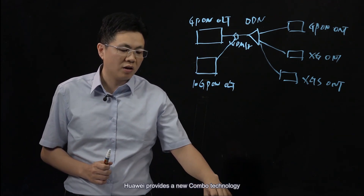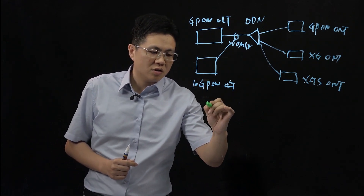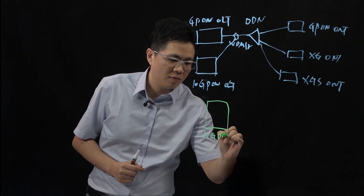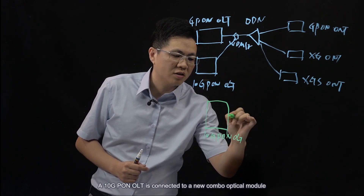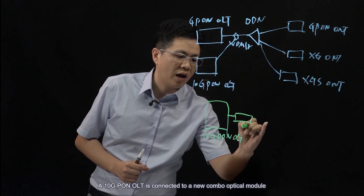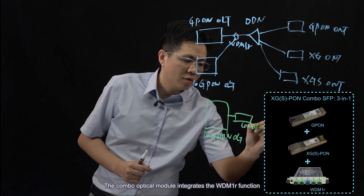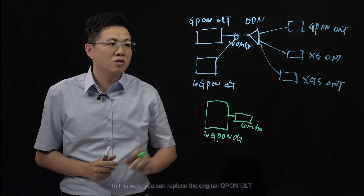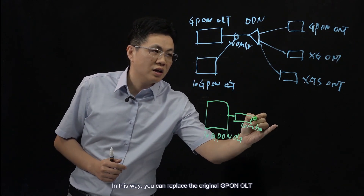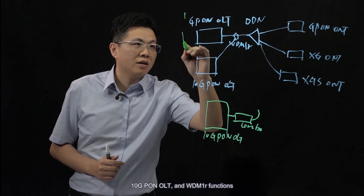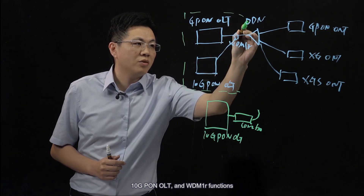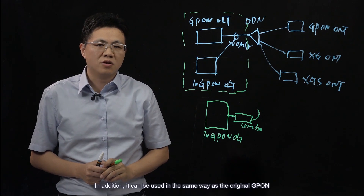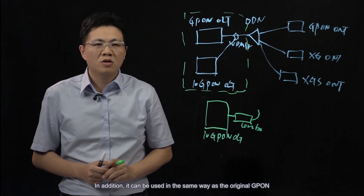Huawei provides a new Combo Technology. A 10G PON OLT is connected to a new Combo Optical Module, which integrates the WDM-1R function. In this way, you can replace the original GPON OLT, 10G PON OLT, and WDM-1R functions. No extra user space is occupied, and it can be used in the same way as the original GPON.